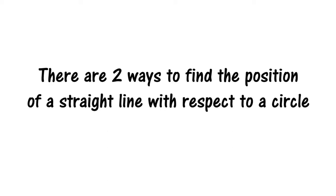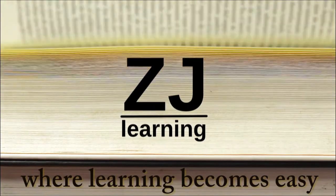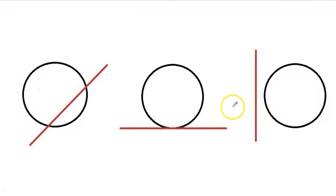There are two ways to find the position of a straight line with respect to a circle. Today we will find it using the discriminant. To find the position of the straight line, we need to find out whether the line intersects the circle at two points, at one point, or at no point at all.